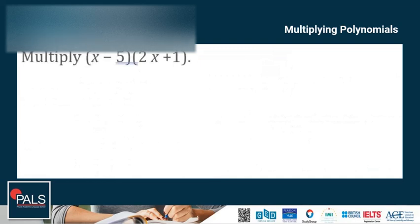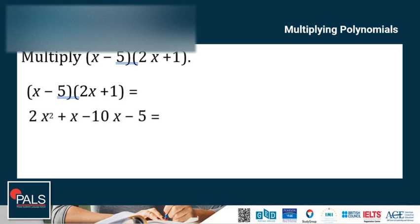Let's try another example applying FOIL and then simplifying. Multiply the first terms: x times 2x gives 2x squared. Then the outer terms: x times 1 gives x. The inner terms: negative 5 times 2x gives negative 10x. The last terms: negative 5 times 1 gives negative 5. Combining like terms, the final answer is 2x squared minus 9x minus 5.